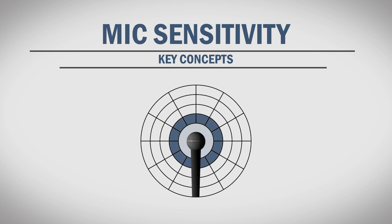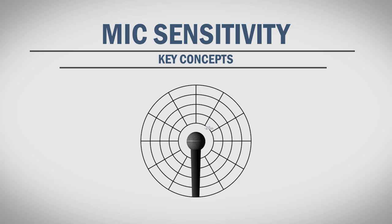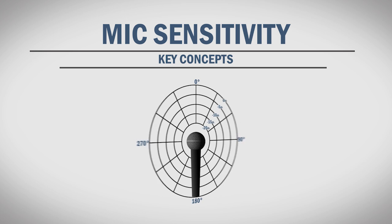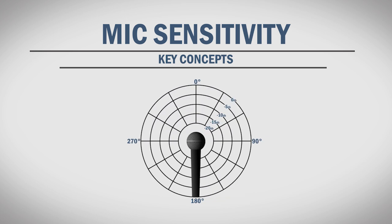Beginning in the center ring moving outward, each step typically represents 5 dB of sensitivity. The innermost ring represents low sensitivity, while the outermost ring represents high sensitivity. The straight lines on the diagram represent the direction of incoming sound. Zero degrees represent sound heading straight into the diaphragm. Ninety degrees and 270 degrees represent sound coming into the side of a mic, and 180 degrees represent sound coming into the back. It's important to understand that while this is displayed as a two-dimensional graph, it actually represents a three-dimensional pickup pattern.